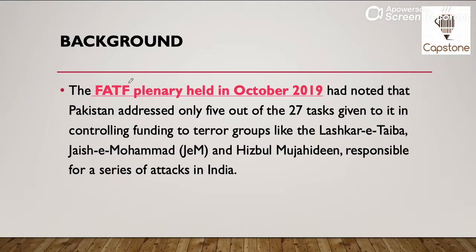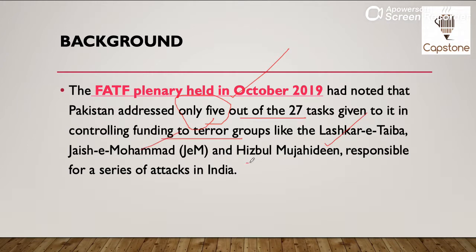Now, if we see the background: FATF ki ek aur plenary meeting held hui thi October 2019 mein, aur us mein bola gaya ki Pakistan ne jo 27 tasks unhe diye gaye the — control karne ko terror groups ko — us mein se sirf 5 hi tasks complete kiye. Iska matlab yeh hai ki Pakistan still supports terror financing. Aur isi liye unke upar, wahan bahut saare groups hain, jaise Lashkar-e-Taiba, Jaish-e-Mohammed, Hizbul Mujahideen — ye responsible hain series of attacks in India ke liye.